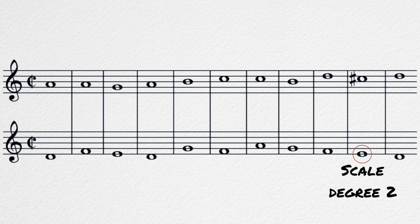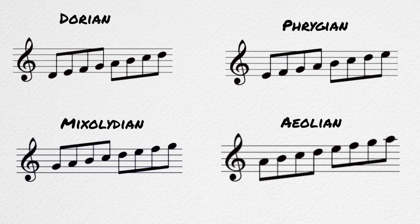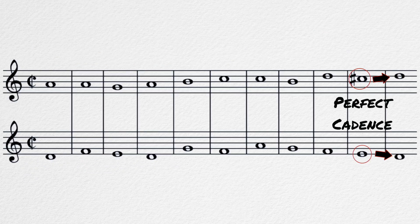In the second to last measure, we need the second degree in the bass and the leading tone in the upper voice. If we are working in Dorian, such as here, Aeolian, Phrygian, or Mixolydian, we have to raise the seventh degree. This is to create a perfect cadence at the end of the piece.